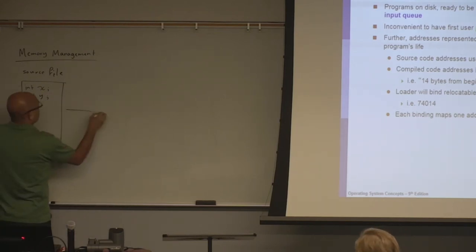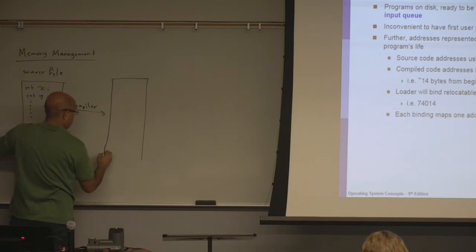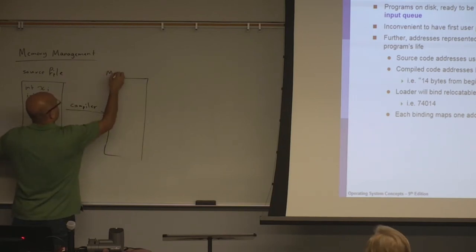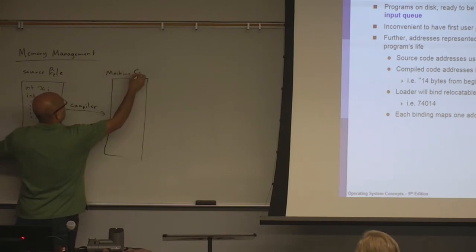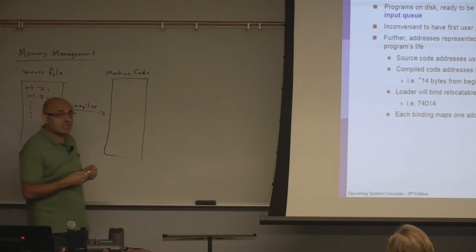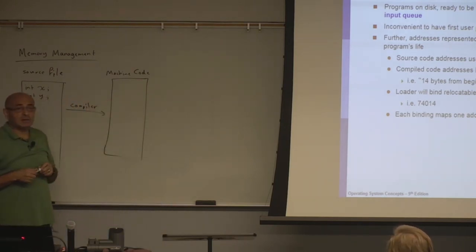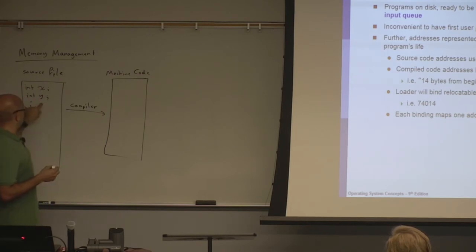The compiler translates source code into machine code. Machine code doesn't have the notion of a variable name — it doesn't have variable names in it. What corresponds to variable names in machine code are memory addresses and registers.